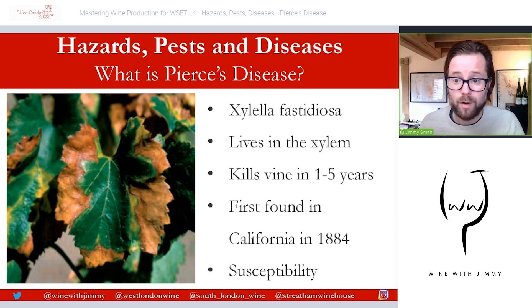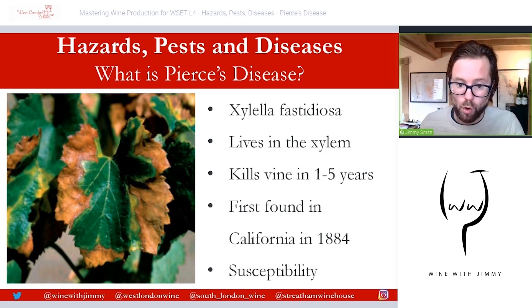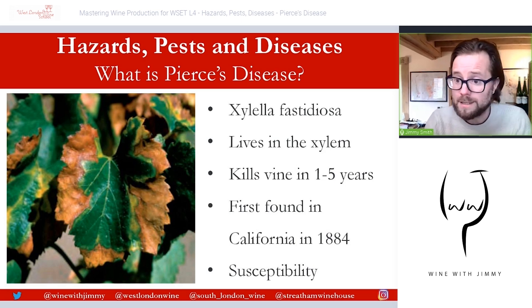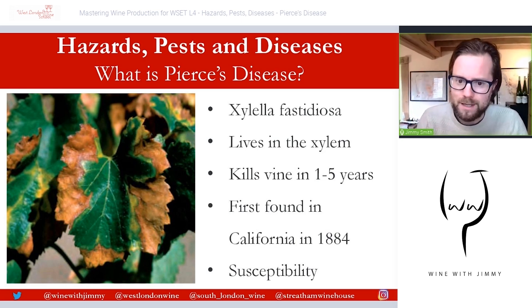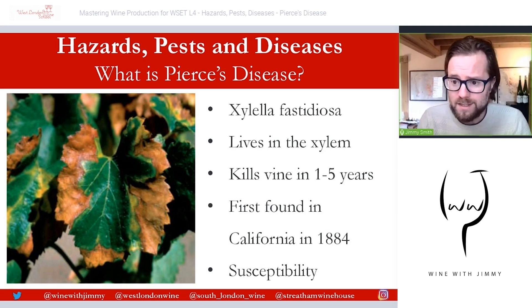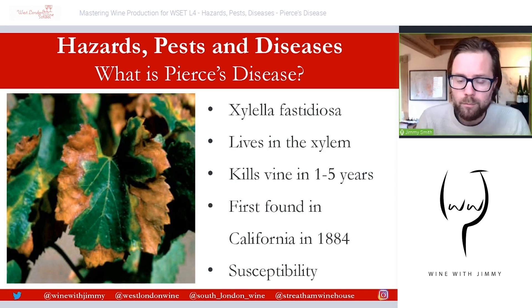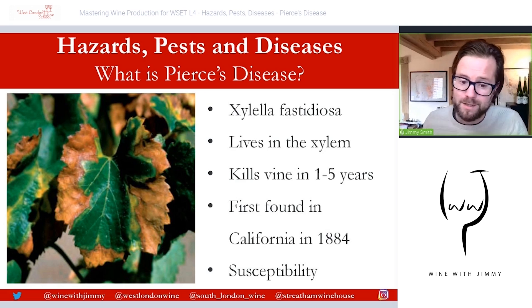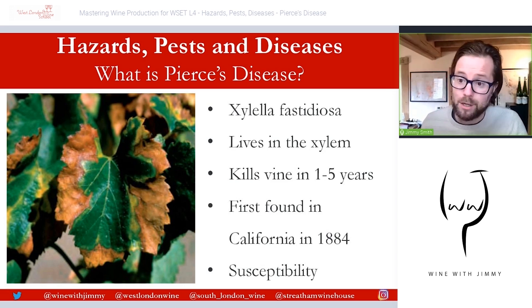Pierce's disease originated on the American continent, initially affecting the southern United States and Central America. Today it is present in California and was first described there in 1884. Some vine varieties are more susceptible than others — much like phylloxera, American vine species have slightly more protection. It is Vitis vinifera, our European vine species, that tends to have greater susceptibility, particularly varieties like Chardonnay and Pinot Noir.